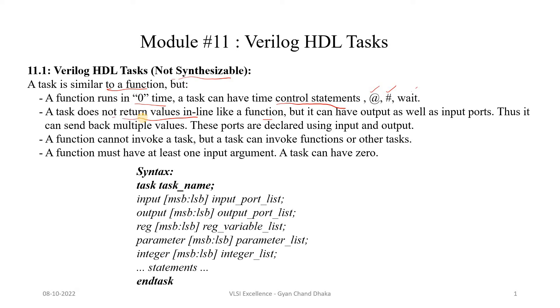A task does not return a value like a function does, but it can have output as well as input ports. So the return value from a task is in terms of output ports. Since a task can have output ports, it can send multiple values.